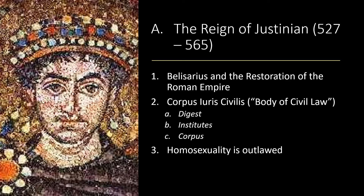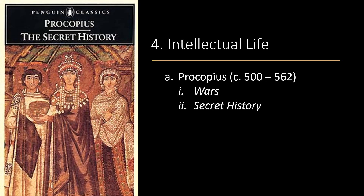Under Justinian, homosexuality was outlawed. Intellectual life was influenced by the traditions of classical civilization — Greek in nature — emphasizing classical models while preserving the ancient works. Procopius was the court historian. He wrote Wars, covering the reconquests of the western Mediterranean and wars with the Persians in the east. His Secret History was a scathing attack and gossip about the misdeeds of Justinian and his wife Theodora.